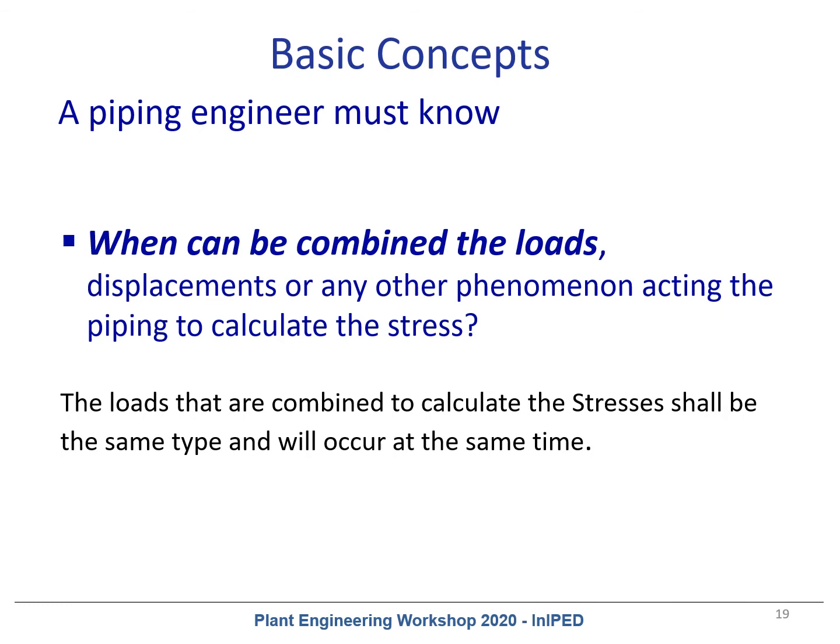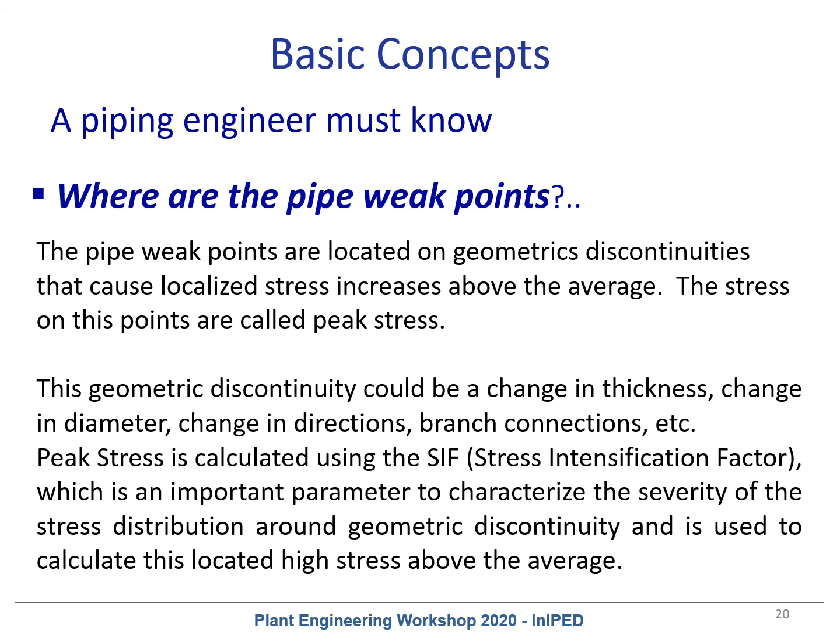When combining loads, you need to combine loads of phenomena that produce effects at the same time. You must also combine only forces with forces — primary stresses together — and secondary stresses separately. You cannot mix both because their limits are different: one is the allowable stress for the material at operating temperature, and the other is the stress range. These phenomena also need to happen at the same time.